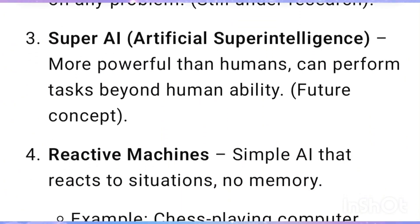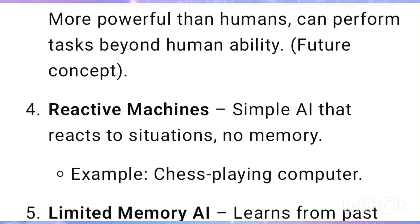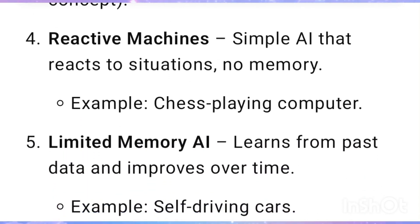Super AI, or Artificial Super Intelligence, is more powerful than humans and can perform tasks beyond human ability. It is a future concept. Reactive Machines are simple AI that react to situations with no memory, for example a chess-playing computer.